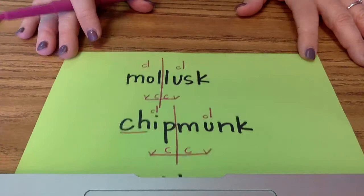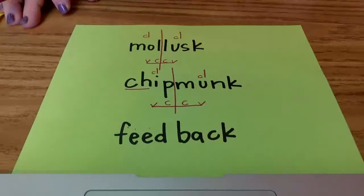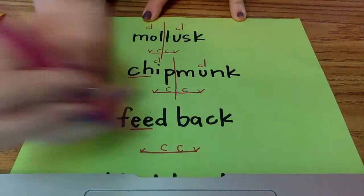All right. Two more. Write this word: F-E-E-D-B-A-C-K. Okay. Vowel team counts as one vowel. A. Bridge. Consonant, consonant. Break.